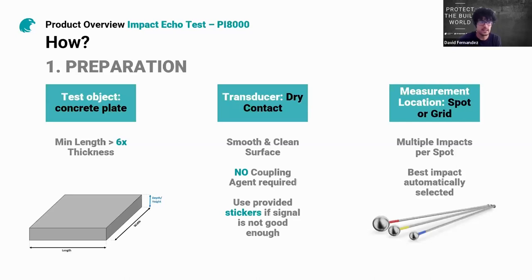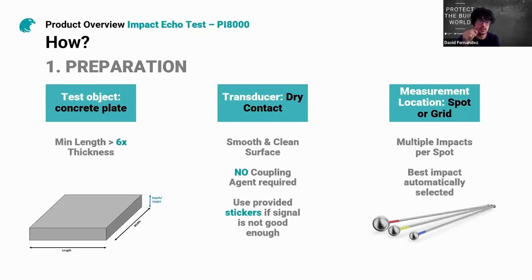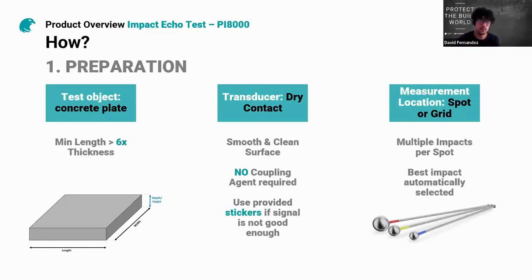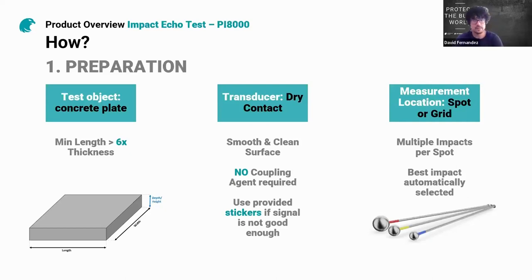We perform dry contact — no coupling agent needed — but the surface has to be smooth and clean. We provide plastic stickers you can place over the sensor tip if the concrete is not completely smooth; once placed, you can use them many times. For measurement location, you decide whether to perform a spot test or a grid test. The best impact per spot is automatically selected by the app, so you don't need to pay a lot of attention to each individual impact.